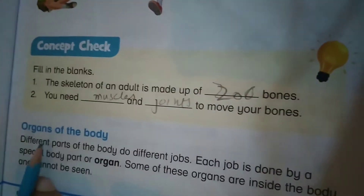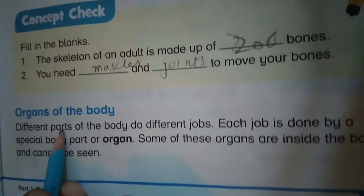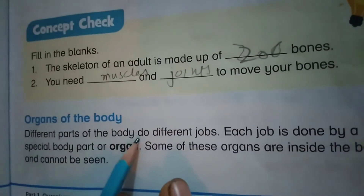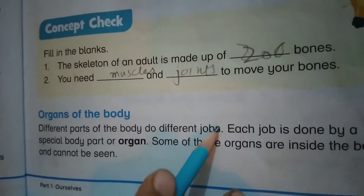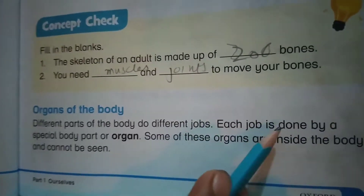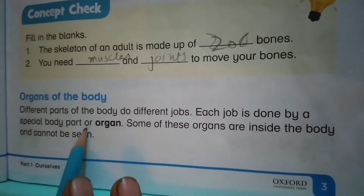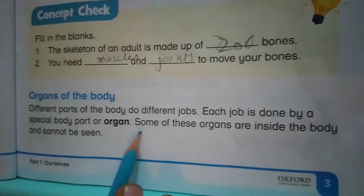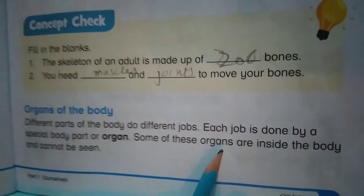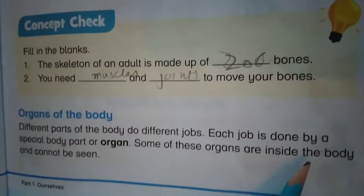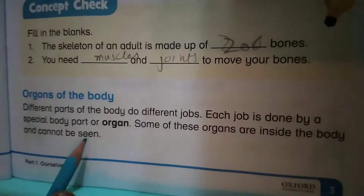Organs of the body. Different parts of the body do different jobs. Each job is done by a special body part or organ. Some of these organs are inside the body and cannot be seen.